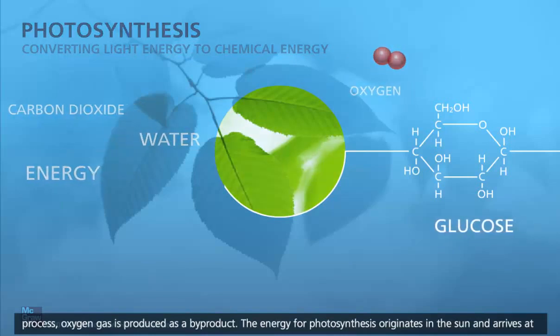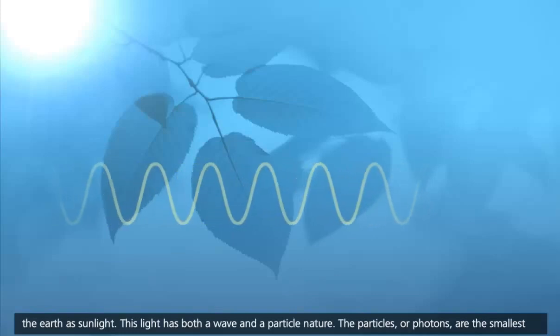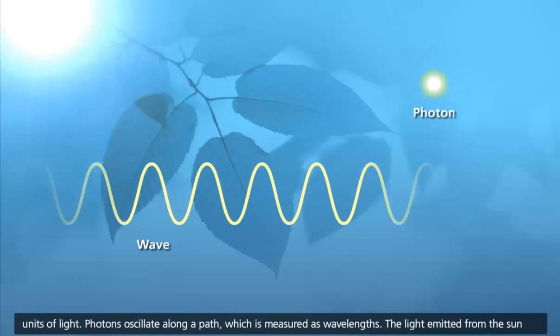The energy for photosynthesis originates in the sun and arrives at the Earth as sunlight. This light has both a wave and a particle nature. The particles, or photons, are the smallest units of light. Photons oscillate along a path, which is measured as wavelengths.